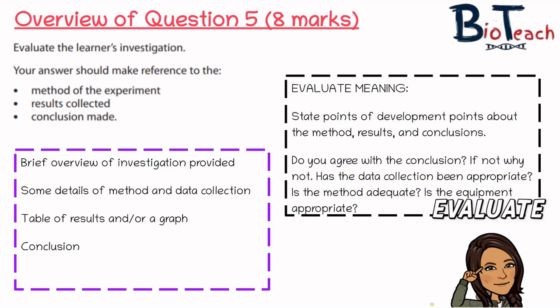For eight marks, you have to evaluate the learner's investigation — making reference to the method, the results, and the conclusion. It's really important to understand what the word 'evaluate' means: your aim is to state developmental points for the experiment — how could it be made better, more accurate, or more precise? It's also important to consider why you're suggesting those improvements. For example, having multiple trials lets you calculate an average and helps identify anomalous results, so always link your improvement to why it's actually an improvement.